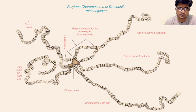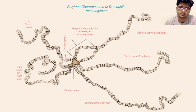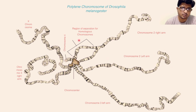Here I am displaying the Drosophila polytene chromosomes. Drosophila has four chromosomes: the X chromosome, chromosome 4, chromosome 2 right arm and left arm, and chromosome 3 left arm and right arm. This arrangement is the result of homologous pairing of these chromosomes, which is very important.